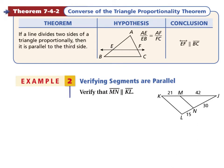In example 2, I want to verify that segment MN and segment KL are parallel. We have to write each side as a proportion. We could say that 21 over 42 equals 15 over 30.